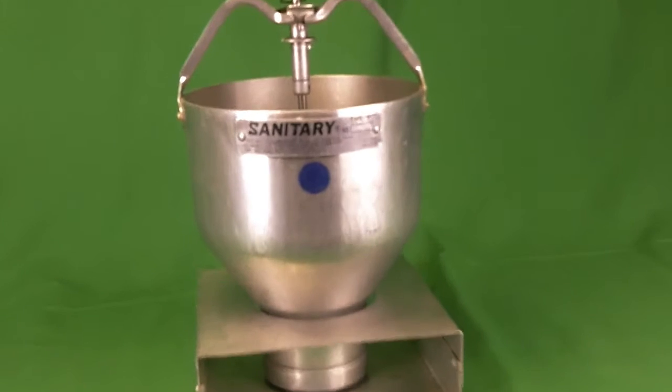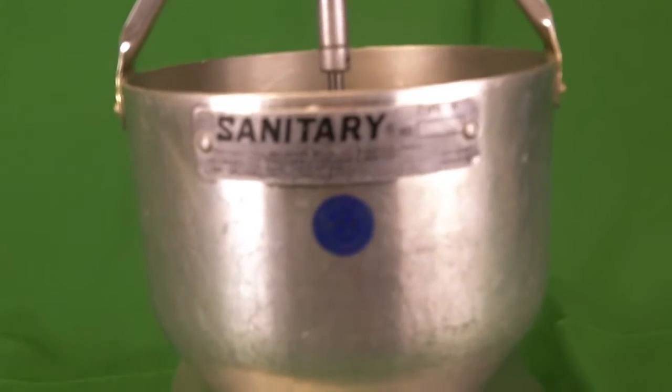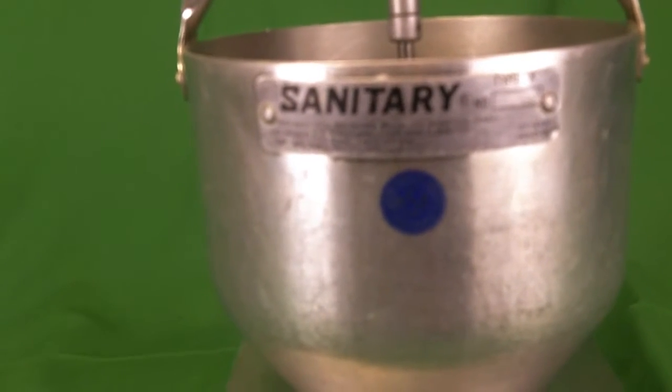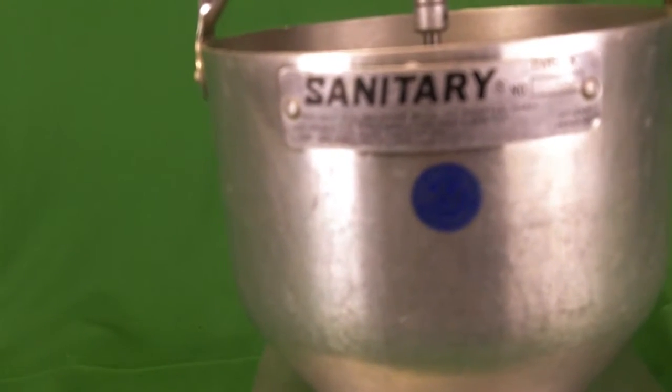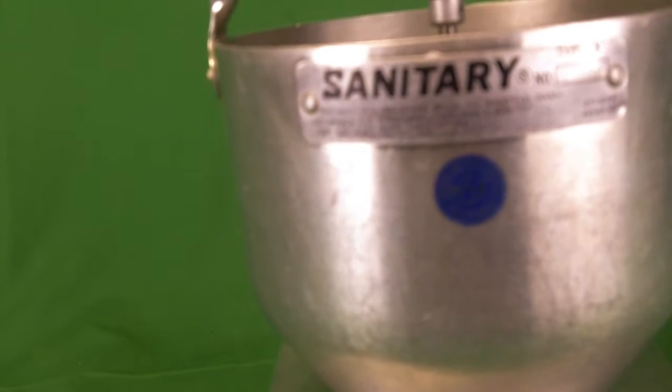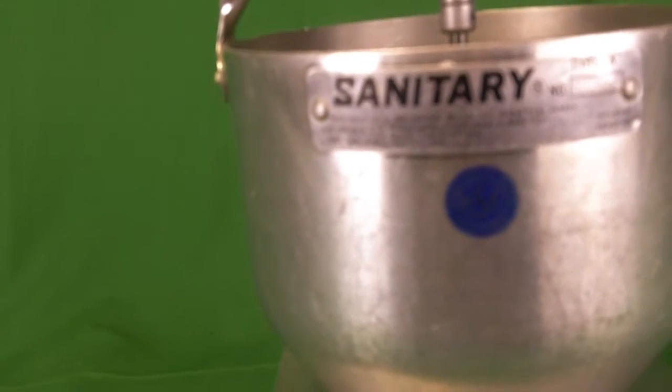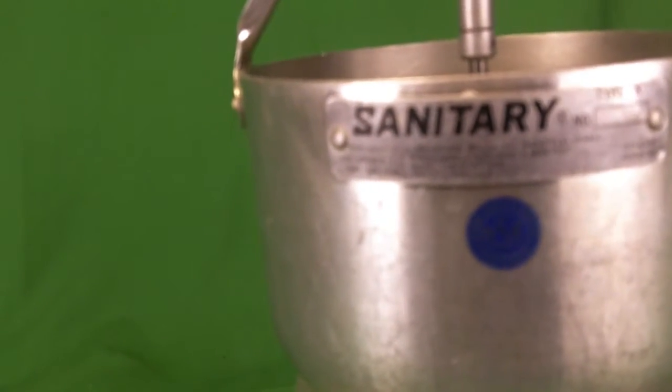We take a look at this machine. We kind of come in here. You can see that it's the sanitary model. Type K has a serial number there and it also gives the manufacturer. It's Belshaw Brothers Seattle Washington.